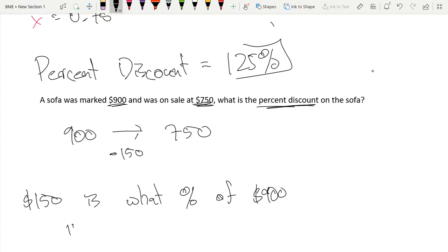So $150 is what percent of $900? Well, to do this, we can take 150 divided by 900 and multiply by 100 over 1. If you are not familiar with this formula or it looks confusing, I encourage you to take a look at our previous video where we discuss percents and the percentage formula.